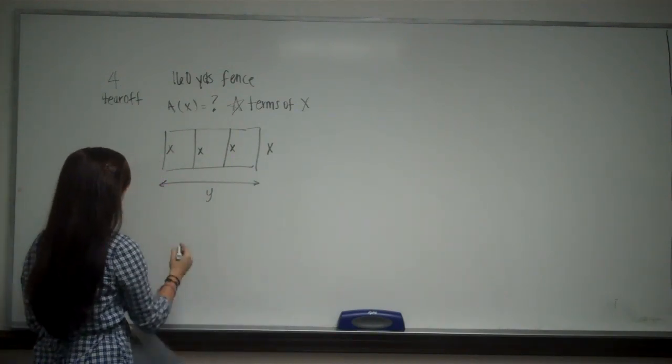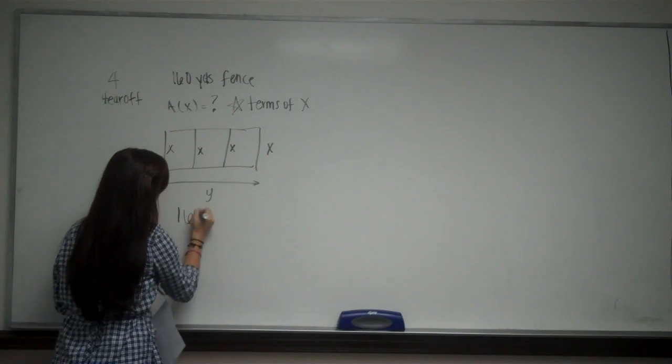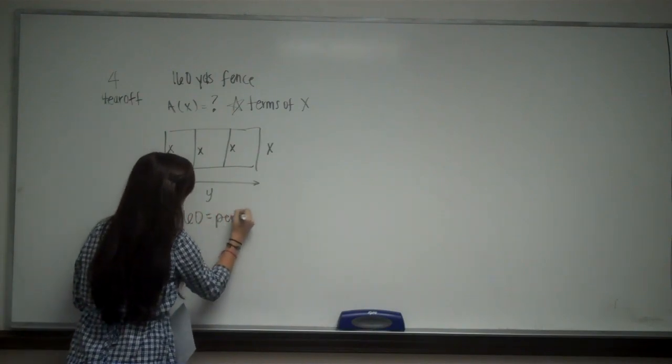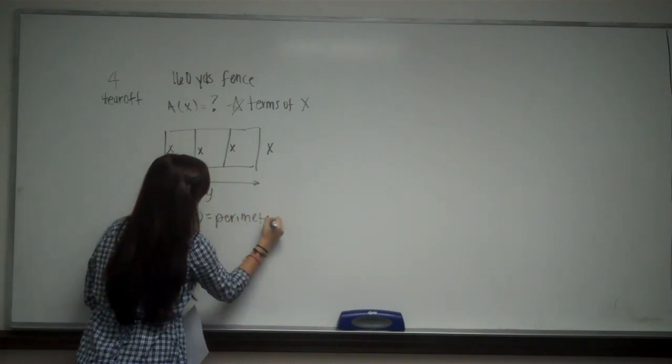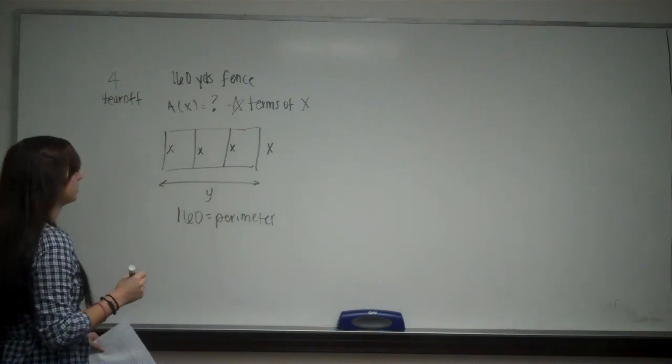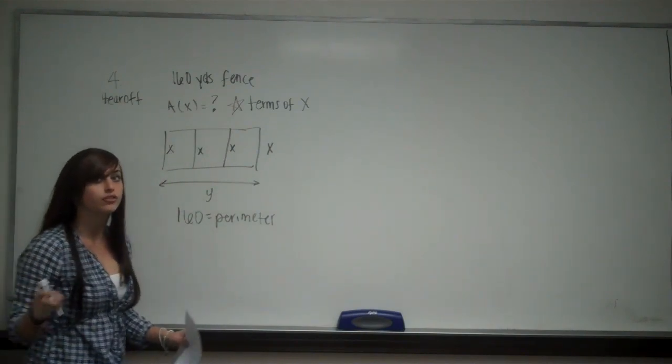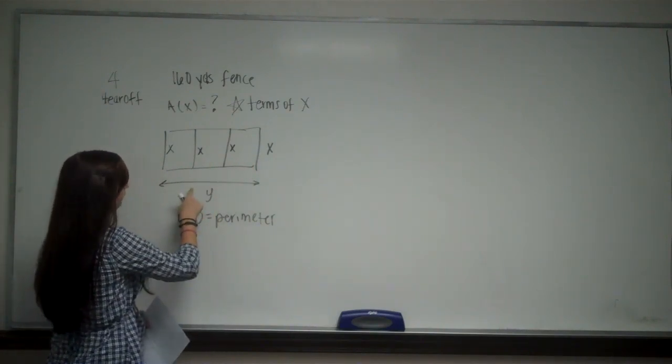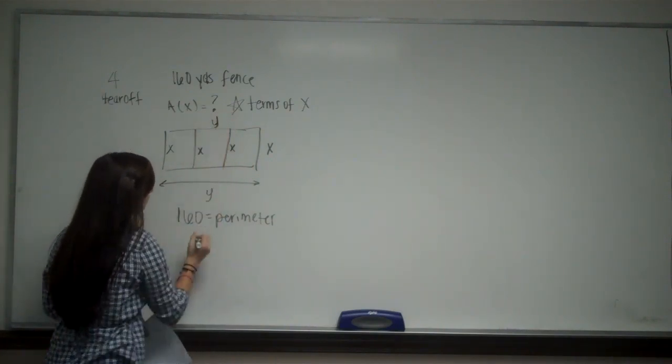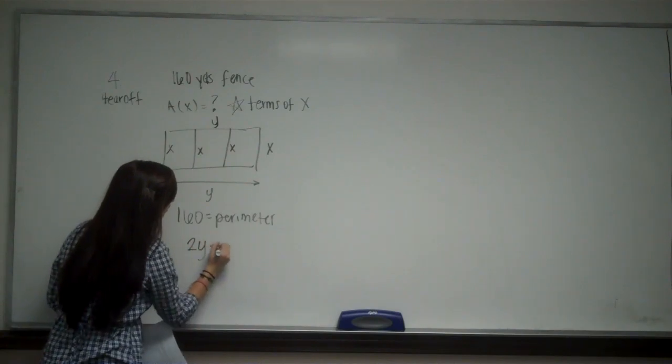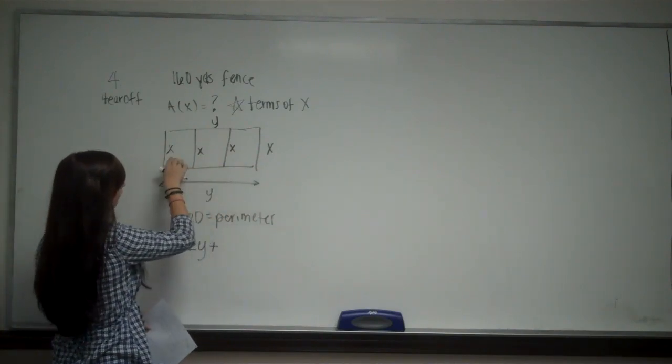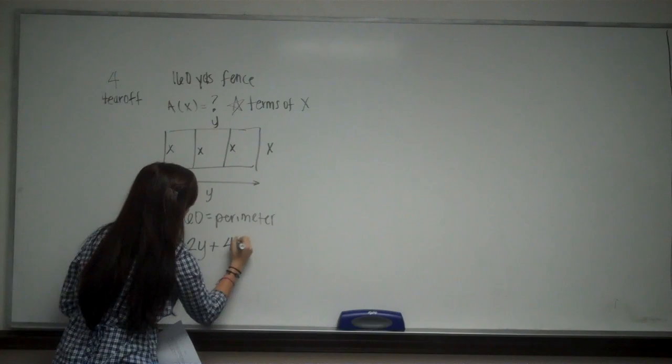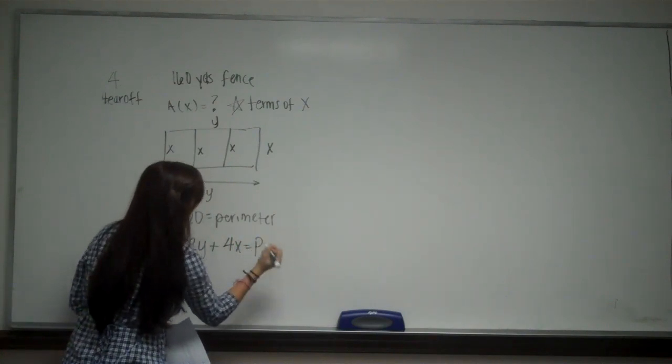And he has 160 yards of fencing to fence this whole area. So that's going to equal our perimeter. So 160 equals perimeter. So I need an equation for my perimeter. So remember, with perimeters you add all the sides. So I'm going to have two y's and one, two, three, four x's.